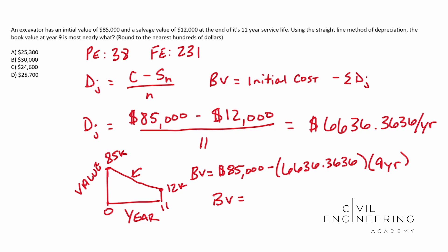When we solve for this book value, you end up with $25,272.73. Rounding to the nearest hundred, you get $25,300. I hope this video helps and we'll catch you next time.